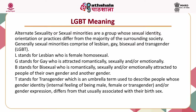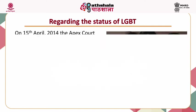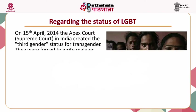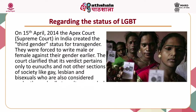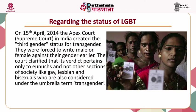In India, homosexuality is a taboo that still prevails, but initiatives have been taken by the judiciary as well as the parliament to change its condition. On 15 April 2014, the Apex Court — the Supreme Court of India — created the third gender status for transgender people, who were previously forced to write female or male against their gender.